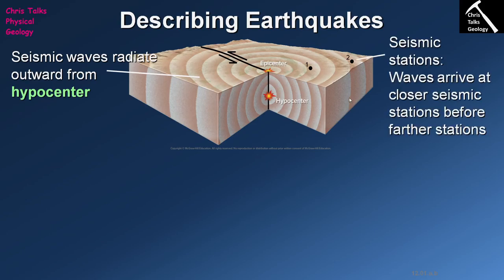The Earth's surface is covered in seismic stations. Nearly every government on the planet will have its own geologic survey or surveying department, and one of their jobs is to set up and monitor seismic stations to detect earthquake activity. Station one is going to detect seismic waves before station two because it's closer to the hypocenter. Typically the further you are away from the earthquake, the longer it will take the seismic waves to arrive. With a decent-sized earthquake, it can be detected by seismic stations on the other side of the planet — these waves can travel through the Earth's entire interior.